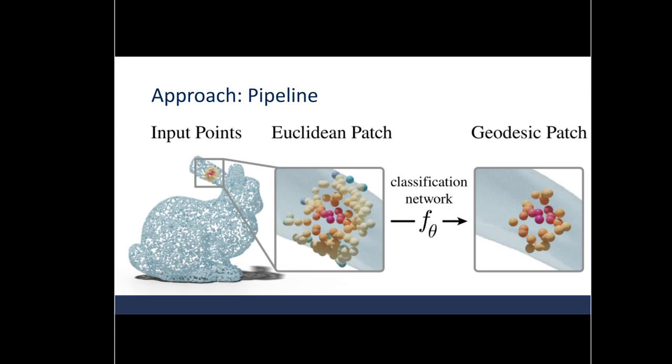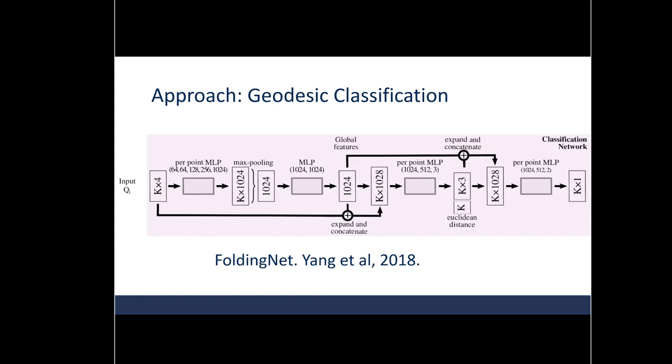Let's look at the first learnable step, which is geodesic patch extraction. The classification network Fθ here learns to find a subset of points that are geodesically closest to the input point on the ground truth surface. The size of the subset is a fixed proportion of the Euclidean patch size, which is also fixed. The Euclidean patch is 120 points, and the geodesic patch is 30 points in the paper. Now let's take a look at the geodesic classification network. Basically, this is a network based on folding net, and the important thing to note here is that it conditions on all the points in the Euclidean patch by max pooling them here. And then that creates global features that are concatenated here, and used to classify whether each of the k-points are in the geodesic patch or not.